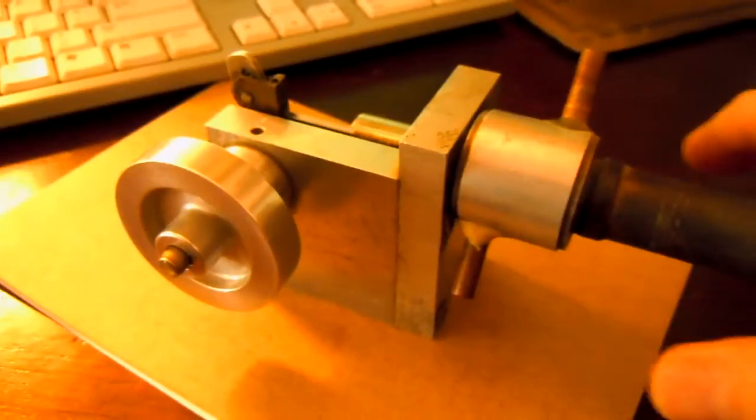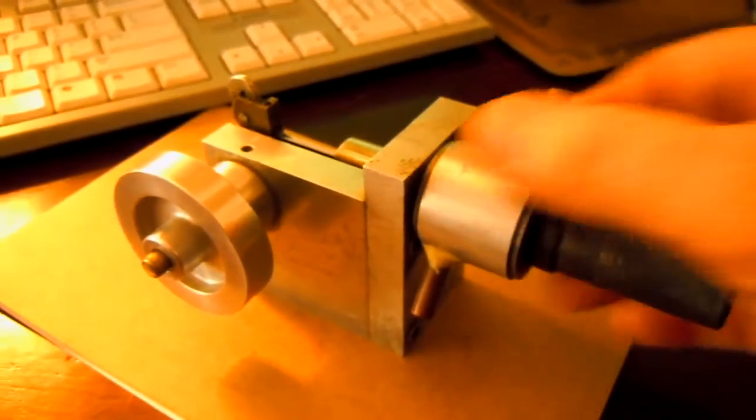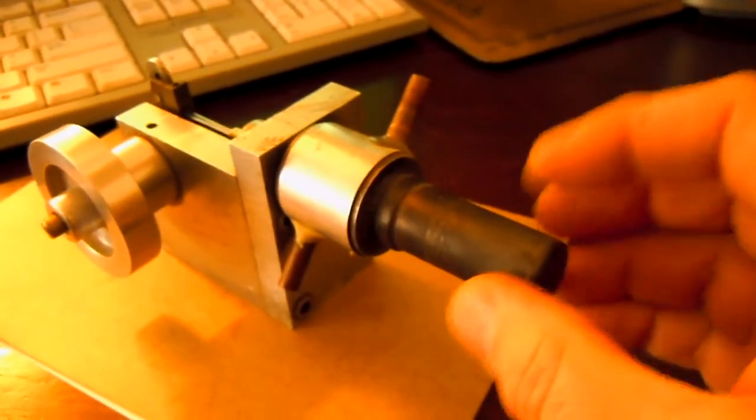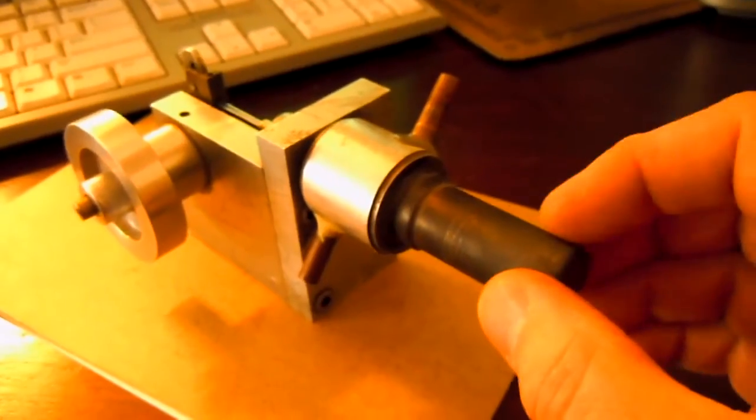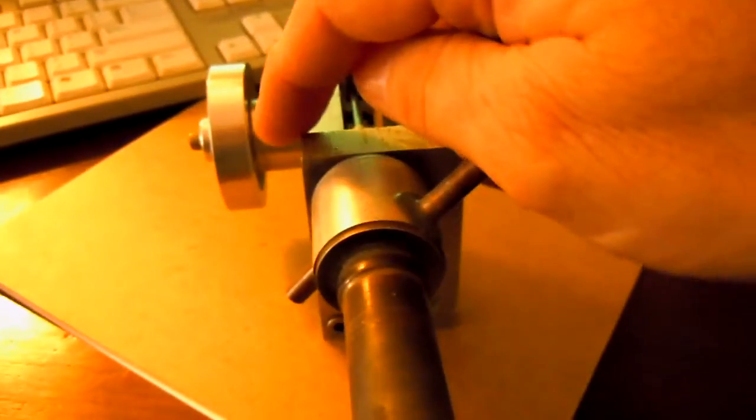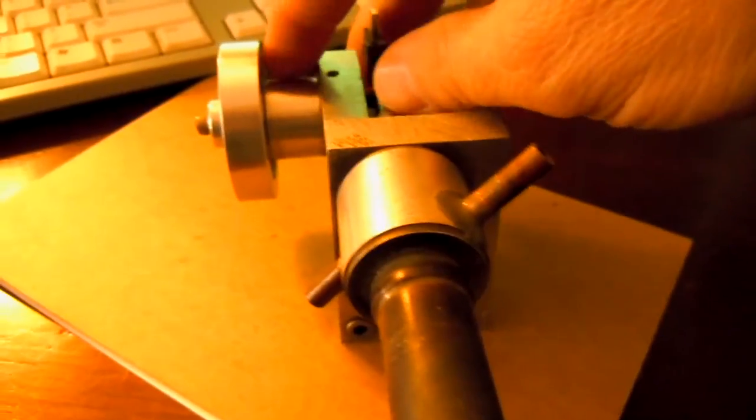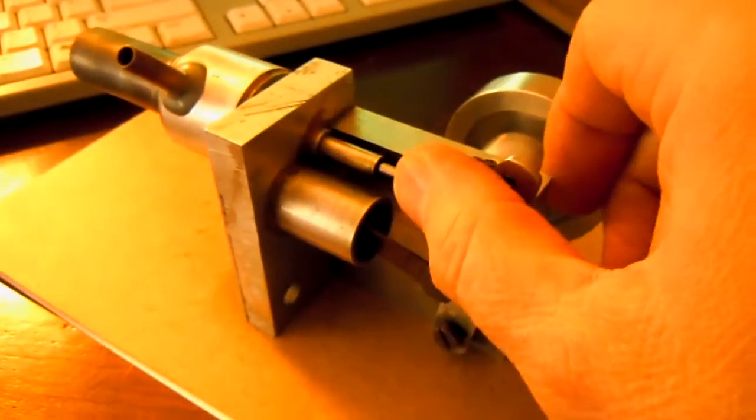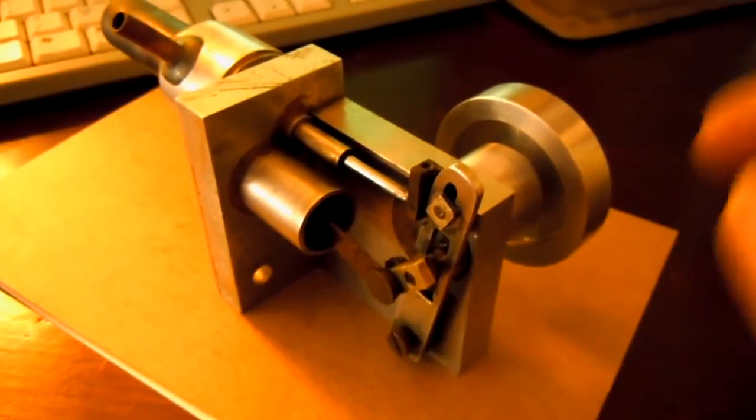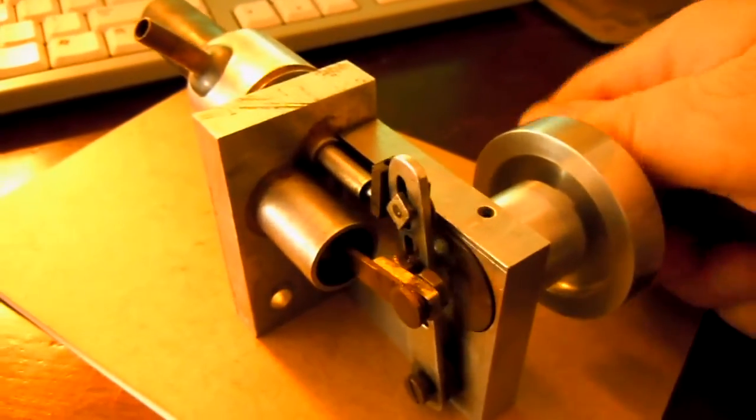This is the flywheel side. This is the water jacket. This is the part that gets red hot here. This is the hot cap at the hot end and the bearing housing. And in the bearing housing, there's actually two ball bearings side by side in there. And with the overhung crankshaft for the two motions. And that's it.